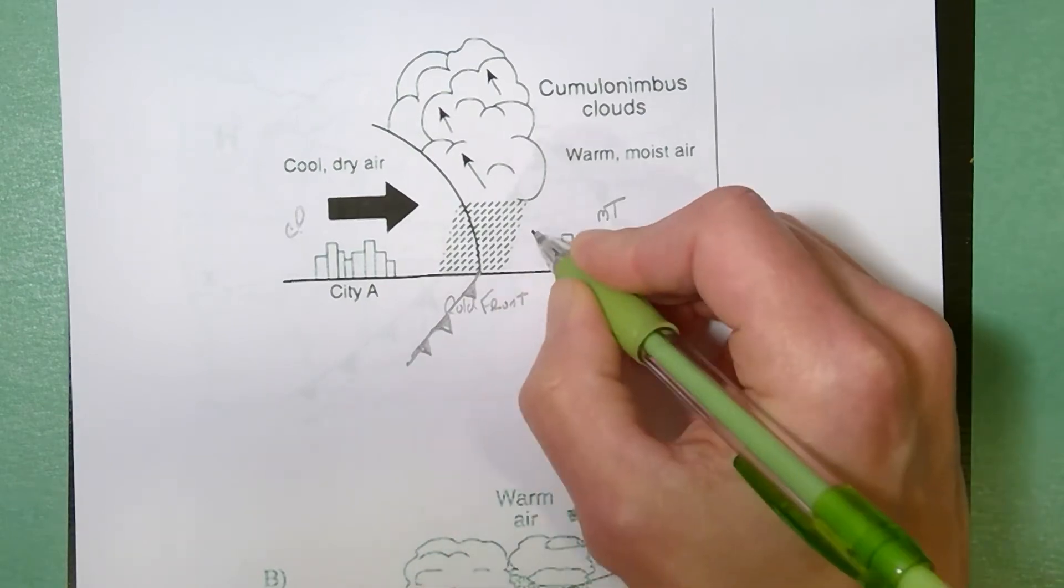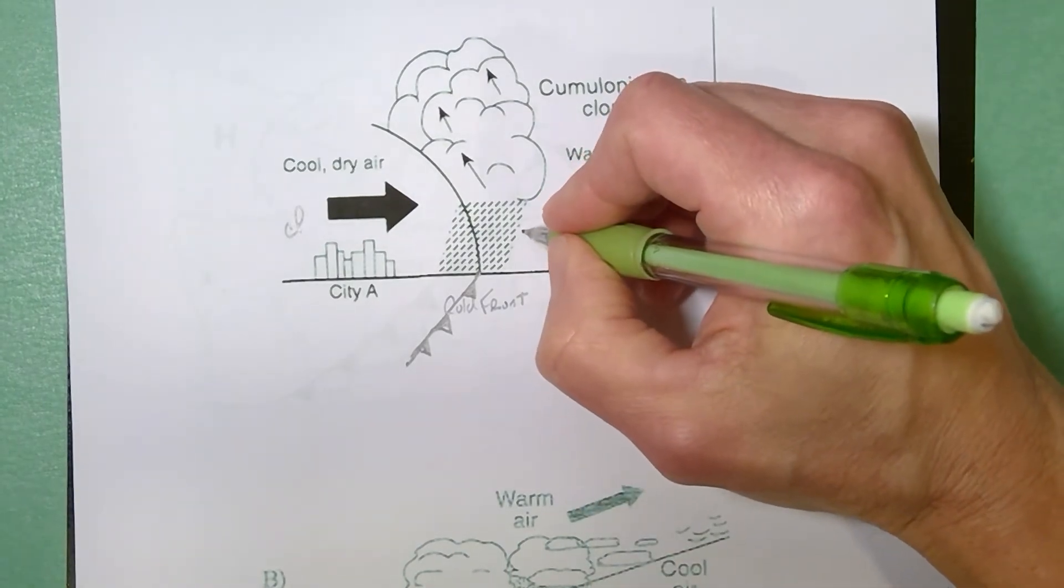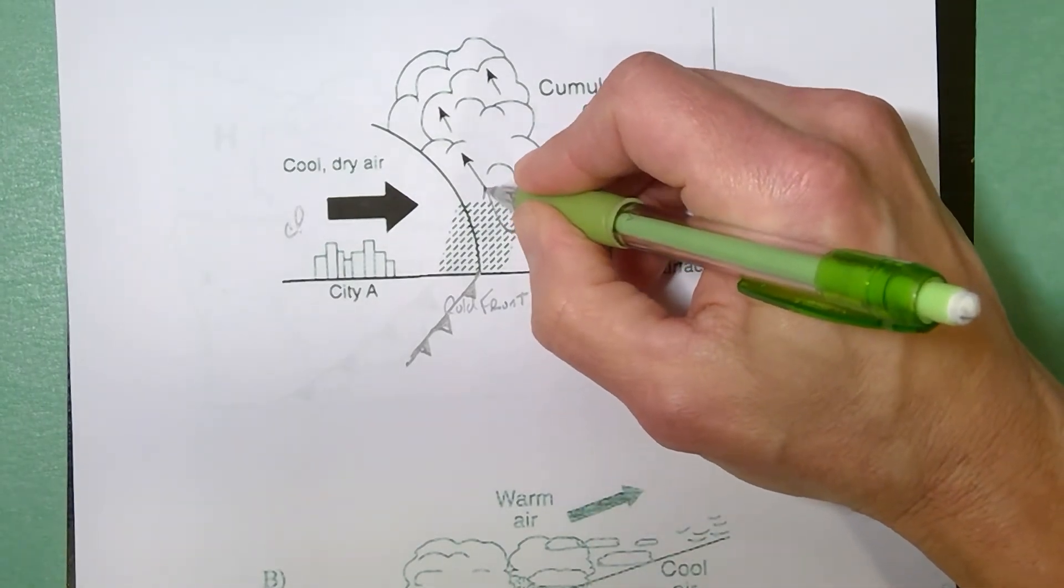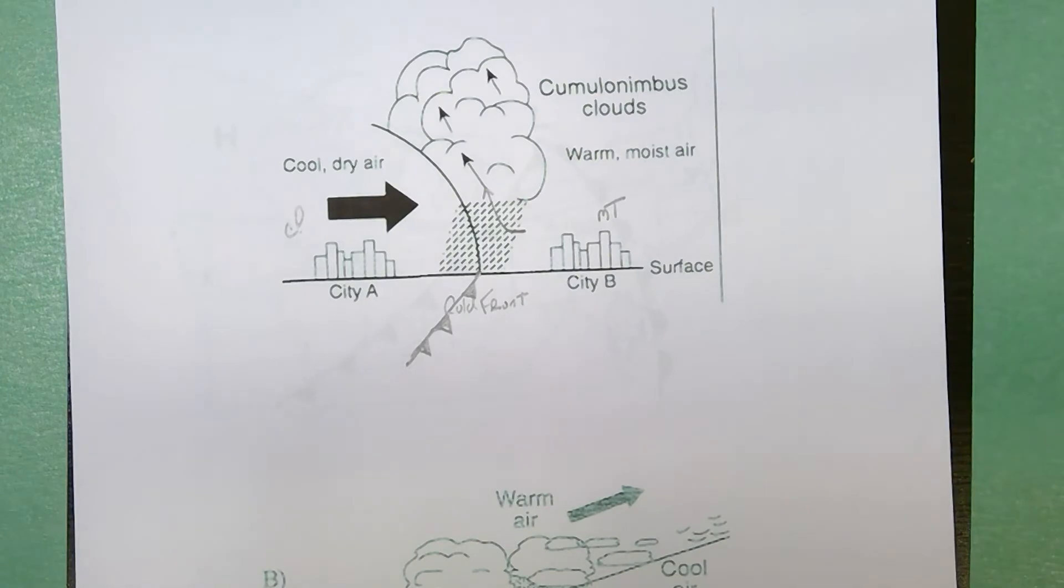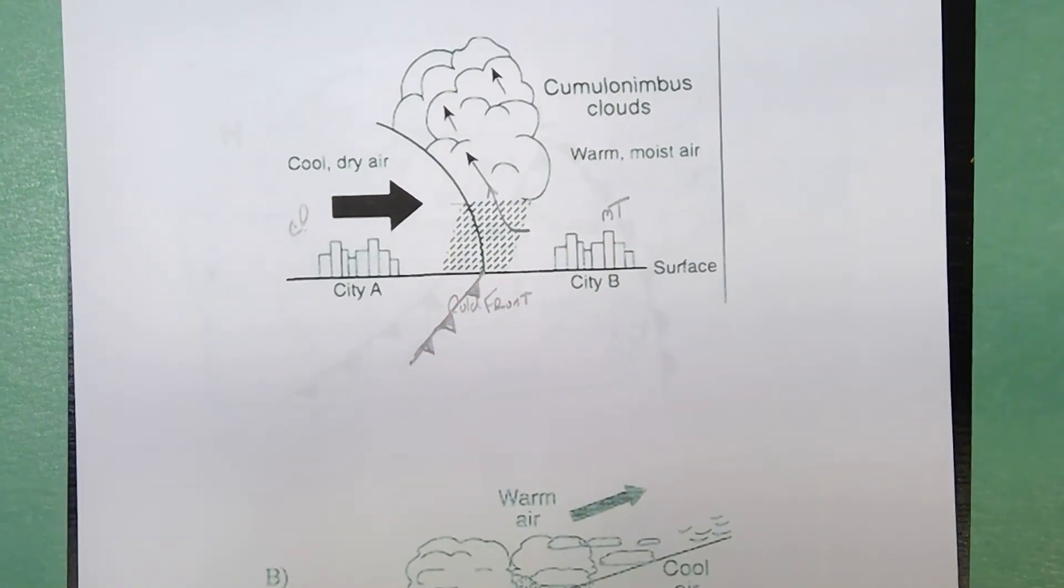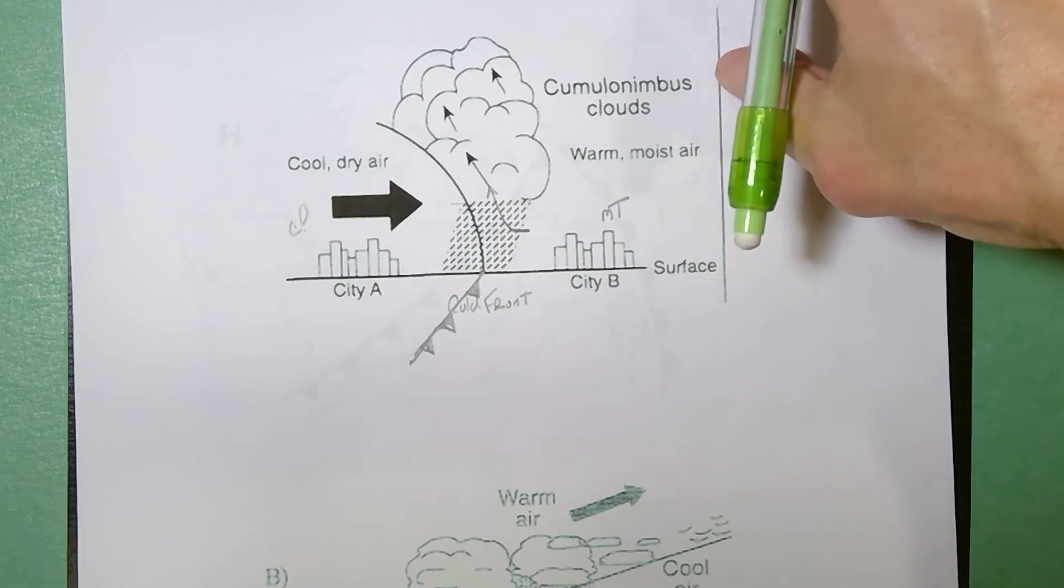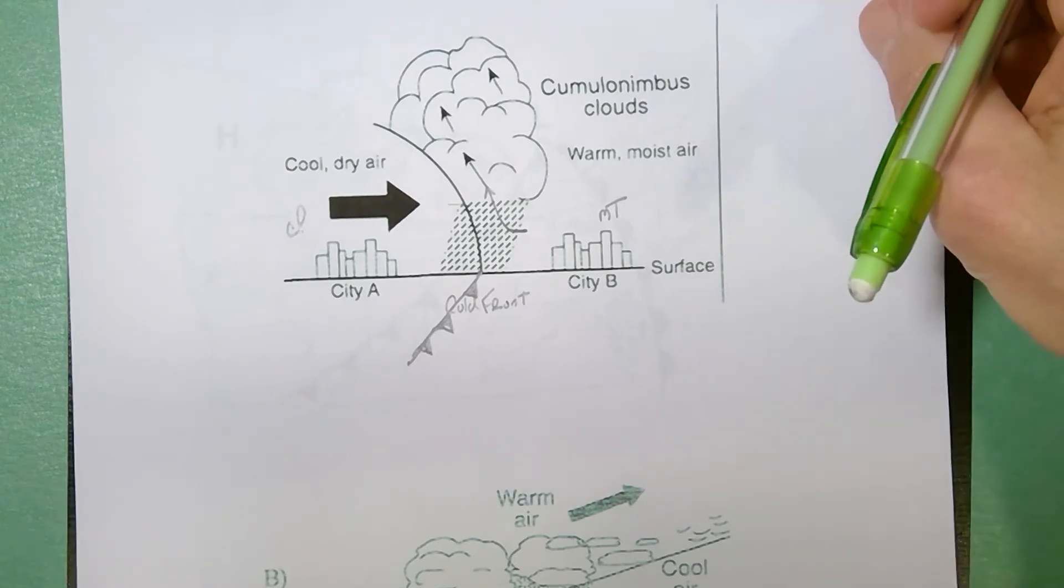But a cold front actually is a three-dimensional surface and at a cold front the warm moist air rises because it's less dense. You get short heavy precipitation and the type of clouds that you get are cumulonimbus clouds. So that's a cross-section or a side view of a cold front.